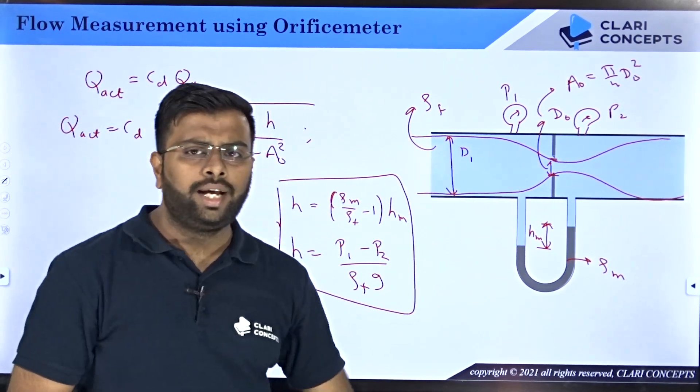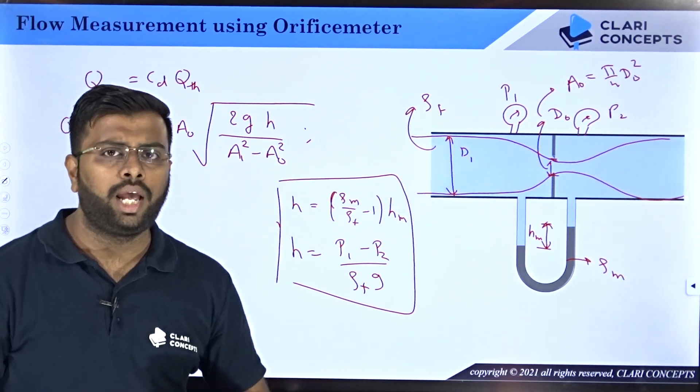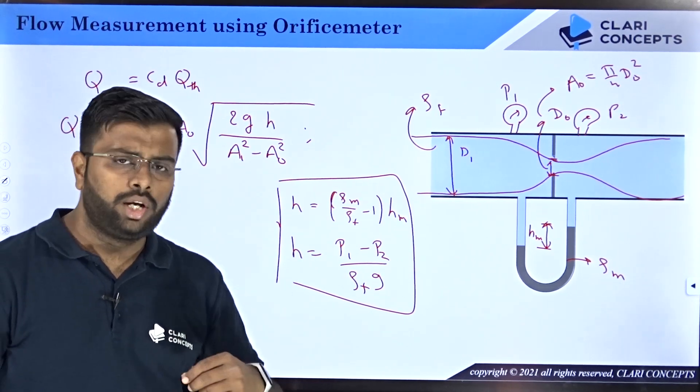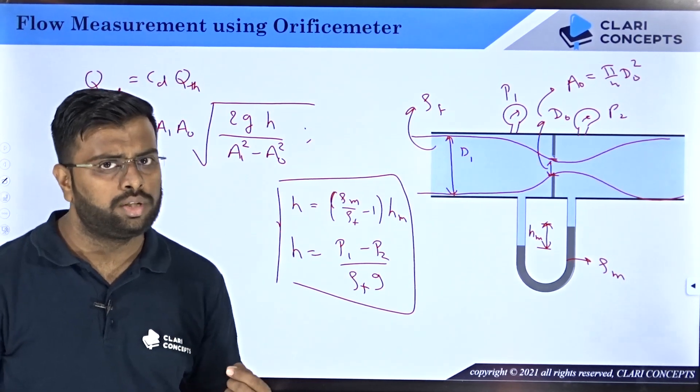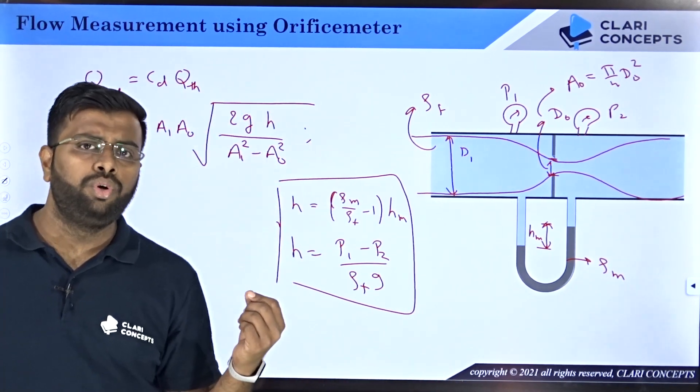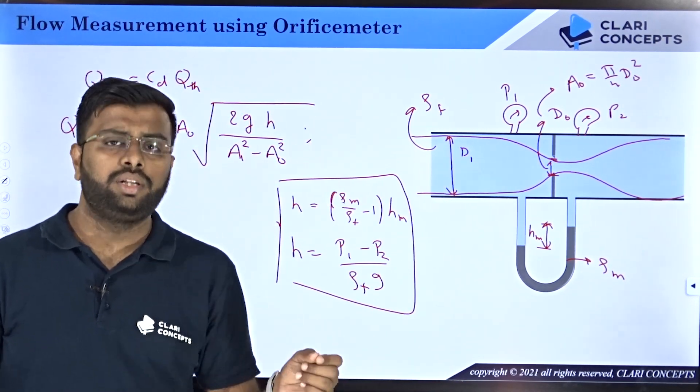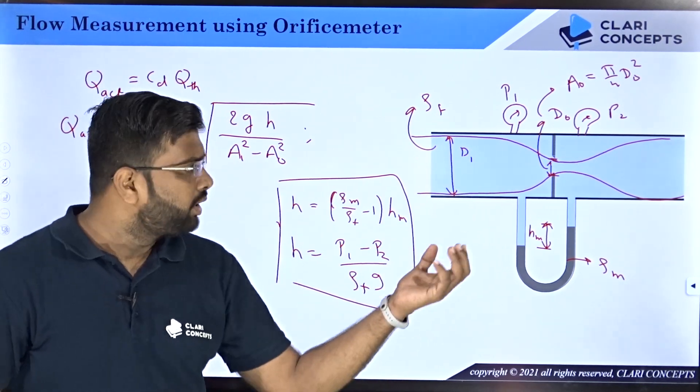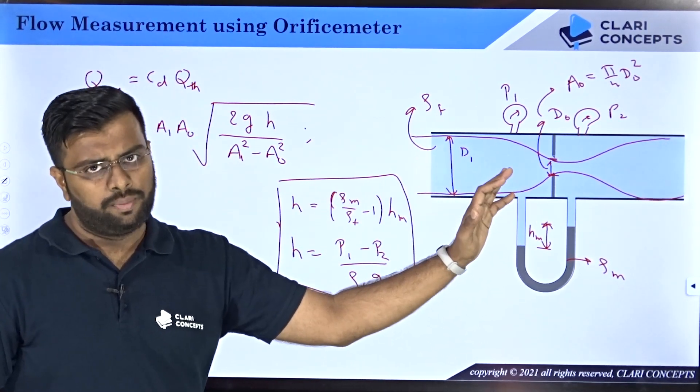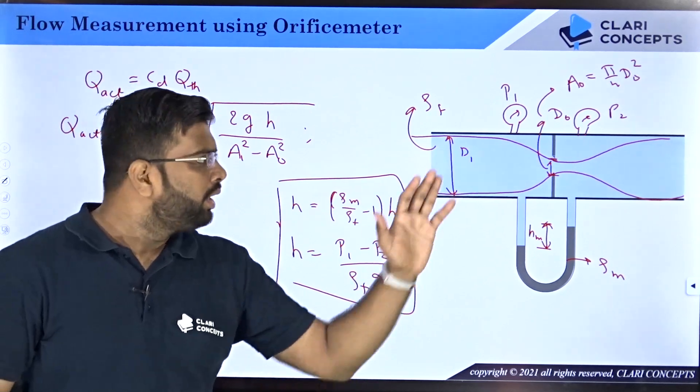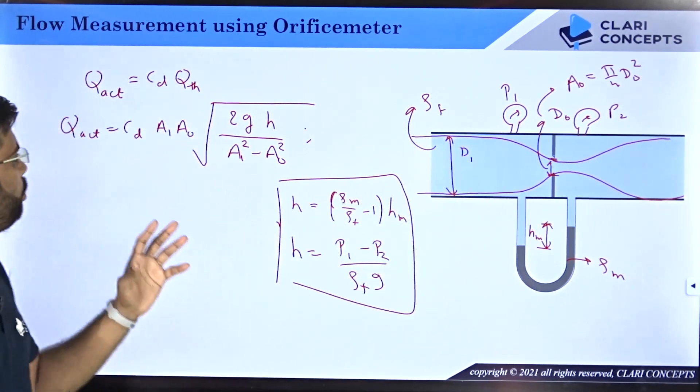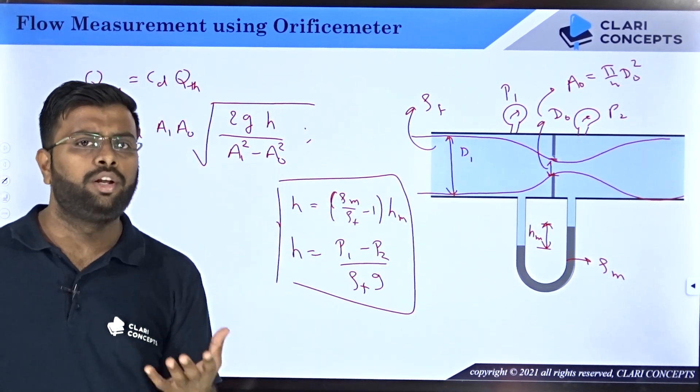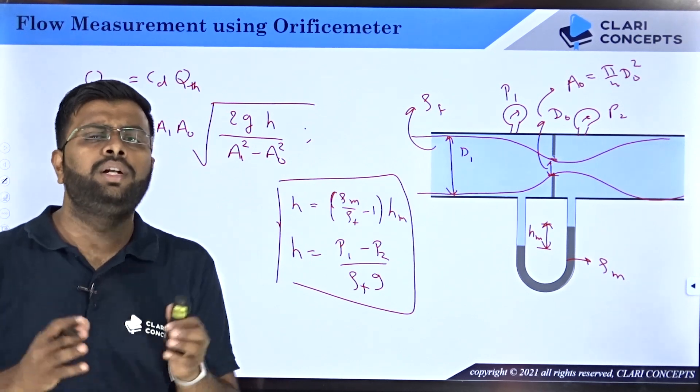Here only one difference will be there. C_d, as I said, this orifice meter is not that great in accuracy. You are going for a cheaper device, you will always lose the accuracy. In case of venturimeter, the theoretical flow was almost 98% accurate to that of the actual value of flow rate. But here the accuracy will be almost 60-65%. The value of C_d will be provided to you by the manufacturer of the orifice meter or the designer of the orifice meter.